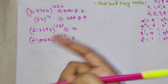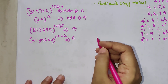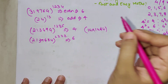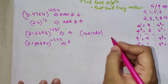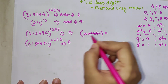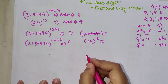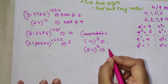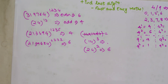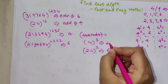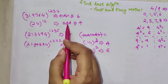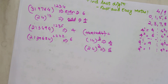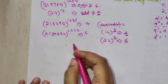Let's verify with actual calculations. 14 raised to 3: the answer is 2744, so last digit is 4 — and 3 is odd, so last digit should be 4. Matching! 24 raised to 2: the answer is 576, so last digit is 6 — and 2 is even, so last digit should be 6. Matching again! This confirms our rule perfectly.